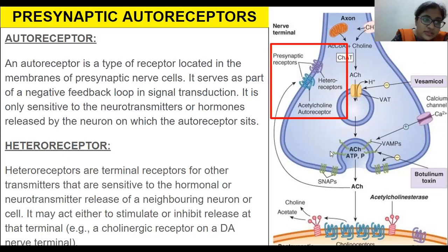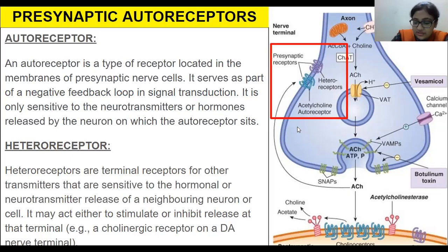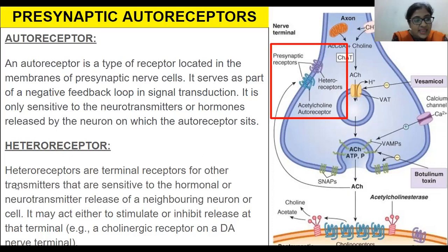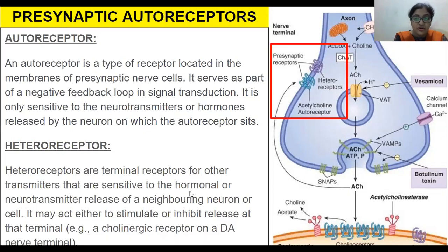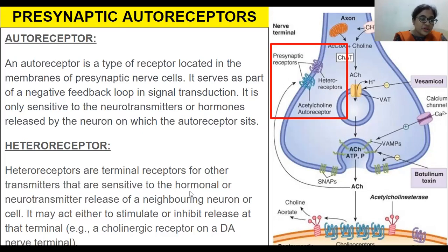The other type of presynaptic receptor is the heteroreceptor. Heteroreceptors are terminal receptors sensitive to neurotransmitters or hormones released by neighboring neurons or cells — not the neuron they sit on. They may either stimulate or inhibit release at that terminal. An example would be a cholinergic receptor on a dopamine nerve terminal.